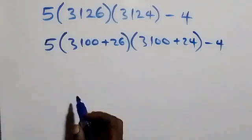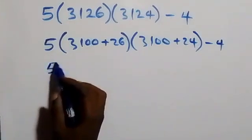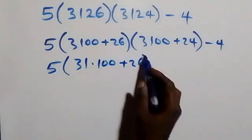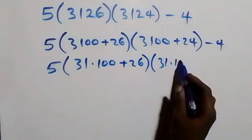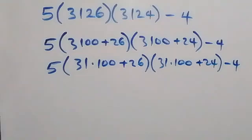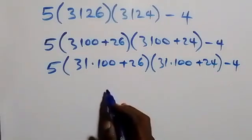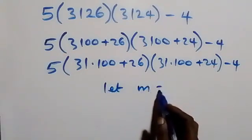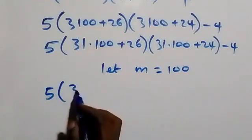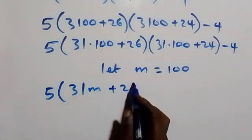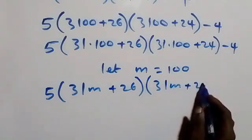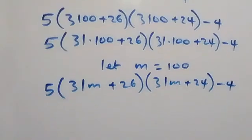We can separate 100 from here. This becomes 5 into bracket 31 times 100 plus 26, also into bracket 31 times 100 plus 24, close bracket, minus 4. We can use a letter to represent 100, so let m equal 100. From what we have, this can be written as 5 into bracket 31m plus 26, also into bracket 31m plus 24, close bracket, minus 4.